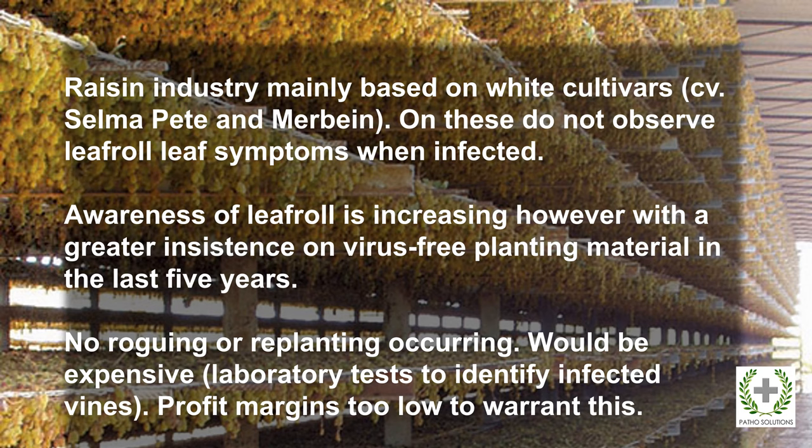The raisin industry in South Africa is based primarily on white cultivars — Selma Pete and Merbine — and on these cultivars leafroll is not observed even when vines are infected. Despite this, there is some awareness of leafroll's effects on yield, and there is a greater insistence on the purchasing of virus-free planting material, which has happened in the last five years or so. No roguing or replanting occurs in the industry, and it would be a very expensive exercise for the grower.